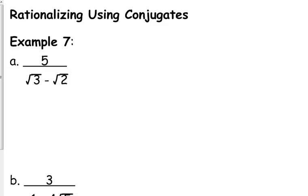If I need to rationalize this expression right here, I don't want those square roots in the denominator. They are separated by a subtraction sign, so I'm going to multiply top and bottom by the conjugate of this radical expression.